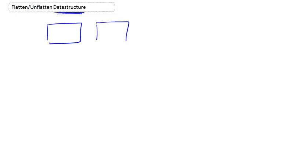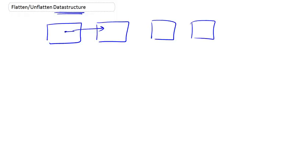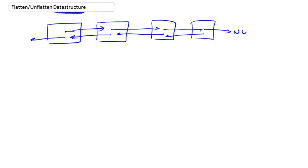The data structure starts off with a doubly linked list, whereby every single node has two pointers: a next pointer and a previous pointer. The first and last elements would have one of their pointers pointing to null — the previous pointing to null at the start, the next pointing to null at the end — and we'd have a tail pointer and a head pointer.